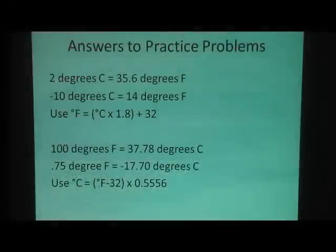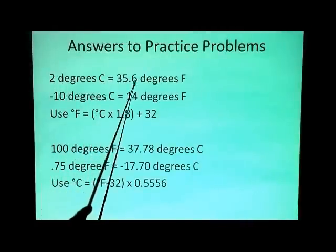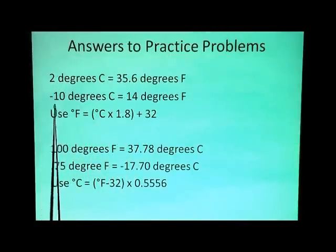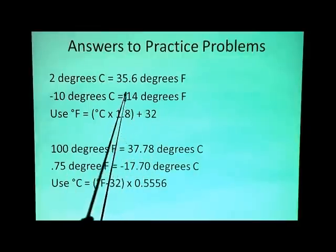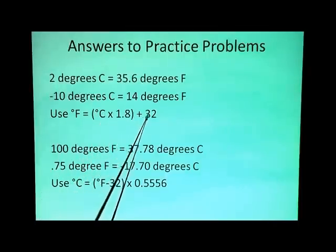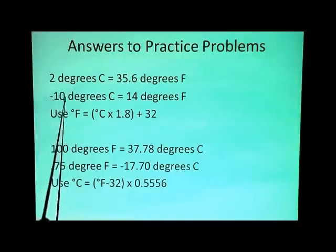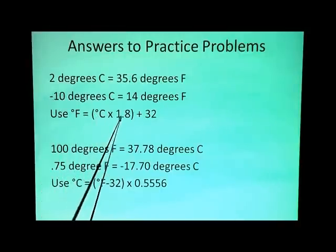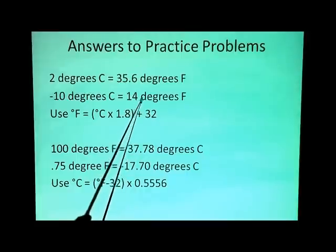Here are the answers to the practice problems. 2 degrees Celsius is 35.6 degrees Fahrenheit. Negative 10 degrees Celsius is 14 degrees Fahrenheit. How do I come up with the answer? By using this formula. Plug in the number 2 here, multiply by 1.8 and add 32, will give you 35.6. Plugging in the negative 10, negative 10 times 1.8 would be negative 18, and then add 32 will give you 14 degrees Fahrenheit.